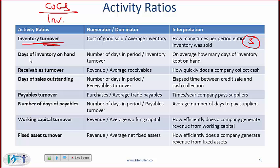Days of inventory on hand is calculated as the number of days in a period — if the period is a year, the numerator is 365 — divided by the inventory turnover. If the inventory turnover is high then the days of inventory on hand will be low. This ratio gives you a sense of how many days of inventory are kept on hand.